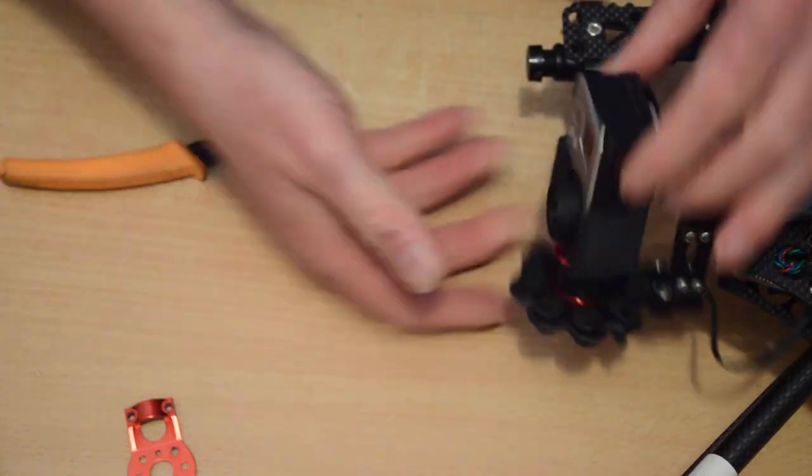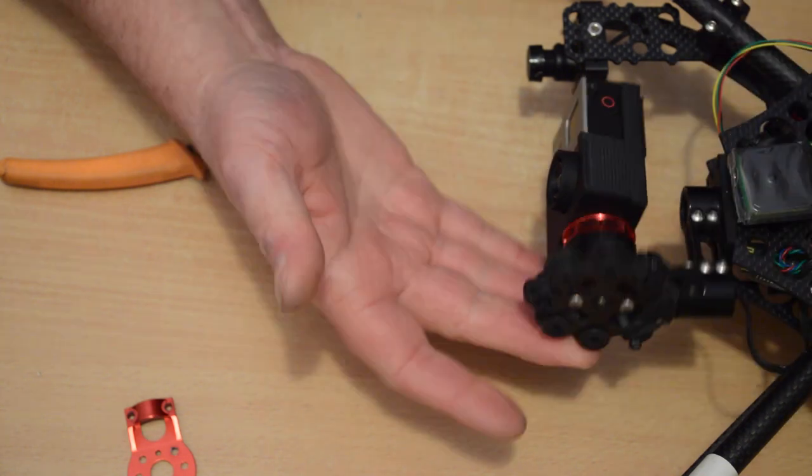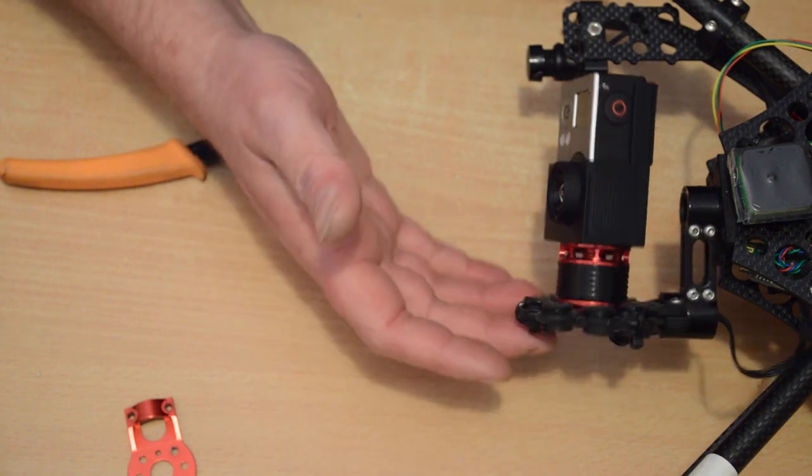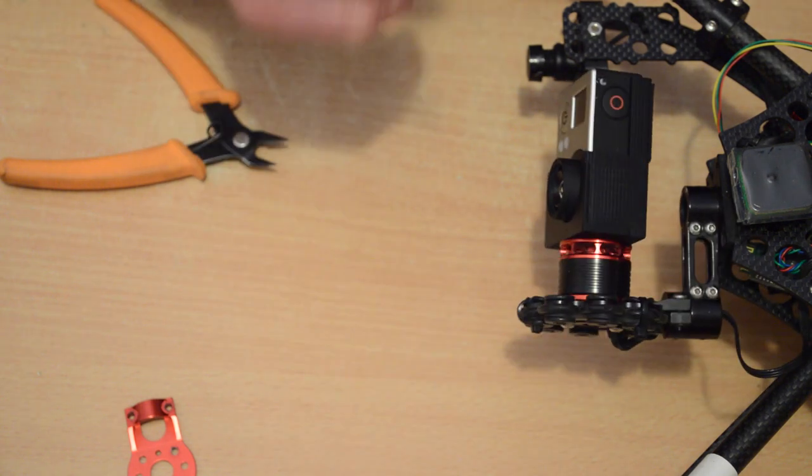And that slides into this slot on the back of the case, and that, allowing for the wire, gets the gimbal balanced in that direction pretty much.